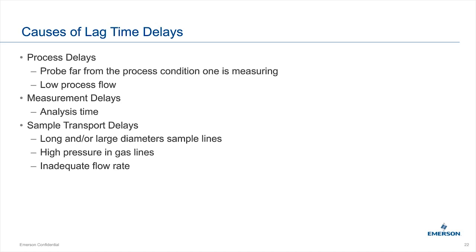There are several types of time delays in a system. One that people overlook is the process delay: if your probe is several yards from the end of your process, it takes time for the fluid from that process to reach the probe. That delay can't be made up downstream. In chemical applications especially, a low-flow liquid can make this even longer. Sometimes you can't place the probe right at the process because of high temperatures, so understand that placing it further downstream adds analysis time.